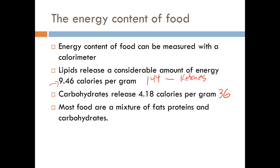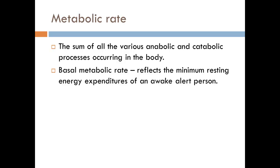Most foods are a mixture of fats, proteins, and carbohydrates. Metabolic rate is the sum of all various anabolic and catabolic processes — anabolic being build-up and catabolic being breakdown — occurring in the body. Basal metabolic rate reflects the minimum resting energy expenditures of an awake, alert person — like sitting on the couch watching TV, just idling. You have a specific amount of caloric expenditure that your body will maintain and burn by itself.